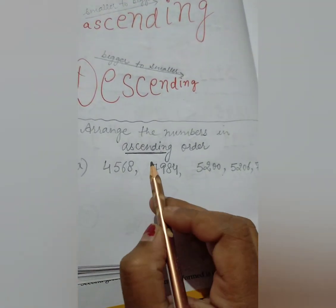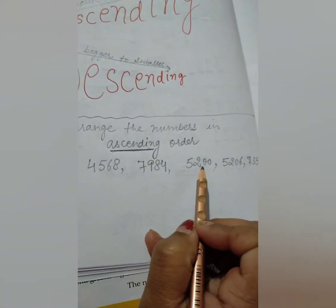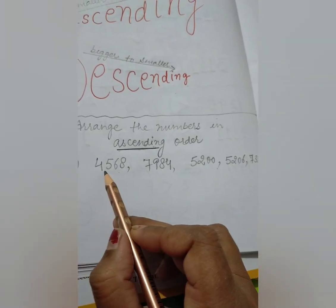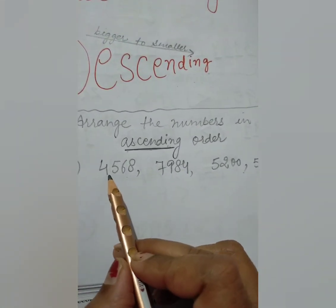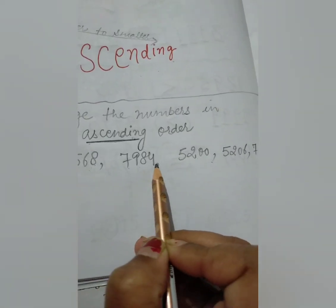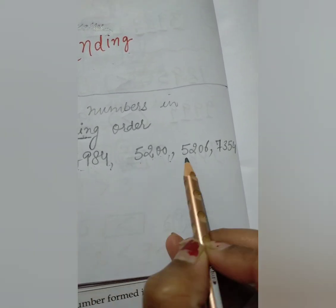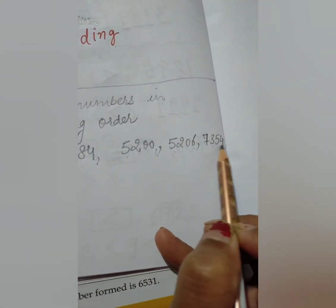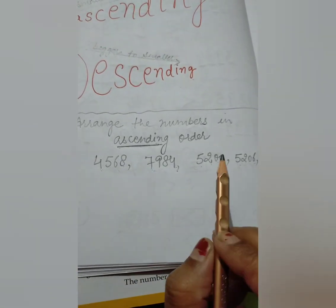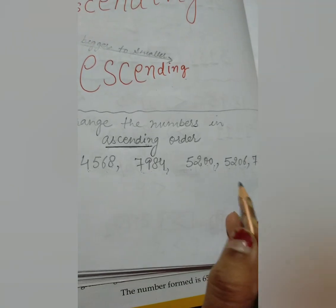Ascending order means we have to start with the smallest. Firstly we will observe all the numbers — all the numbers are having the same number of digits: 4 digits each. When all the numbers have the same number of digits, it becomes a little bit easy for us to compare them.